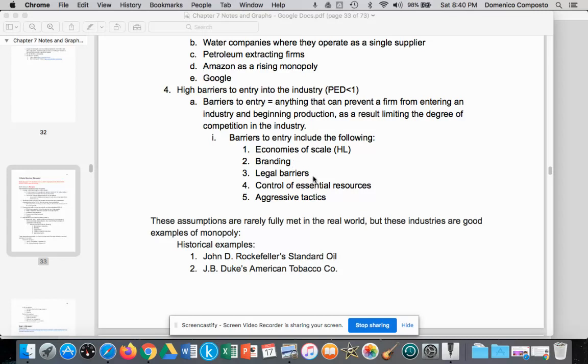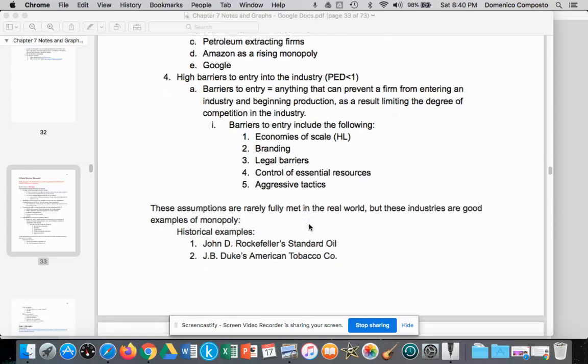Other barriers could include legal barriers, copyrights, protection of intellectual property that prevents other firms from copying that technology, and also control of essential resources. With the example of petroleum, there's also the use of aggressive tactics. If you looked at the history of John D. Rockefeller's Standard Oil Company, they used very aggressive tactics against smaller petroleum firms.